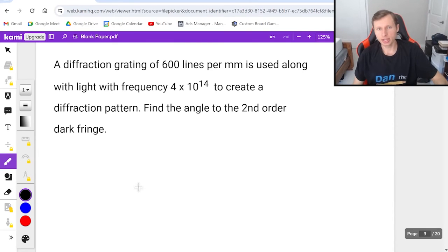So here we go. A diffraction grating of 600 lines per millimeter is used along with light with frequency 4 times 10 to the 14th to create a diffraction pattern. Find the angle to the second order dark fringe.